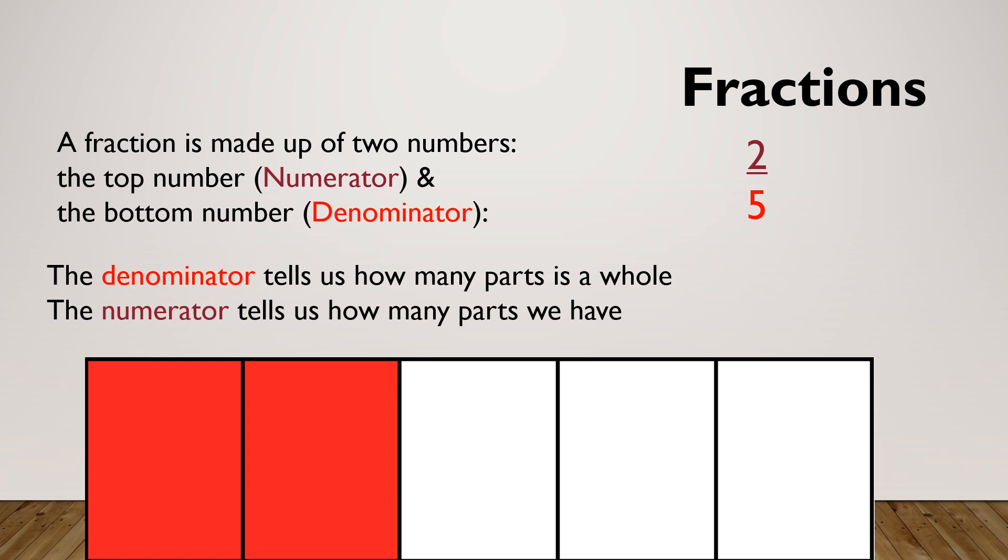So let's talk about what a fraction actually is. A fraction is made up of two numbers. The top number is called the numerator and the bottom number is called the denominator. These words are not needed for entry three criteria. However, it is good that we start calling things by the proper names as soon as possible. So our numerator in this example is the two. The denominator is the five. So our denominator tells us how many parts is in the whole. And the numerator is telling us how many parts we have.